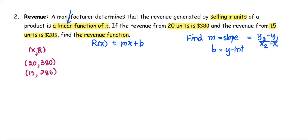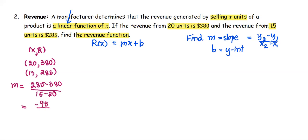With these two ordered pairs, we can find m. m equals y2 minus y1 over x2 minus x1, which is 285 minus 380, all divided by 15 minus 20. The numerator simplifies to negative 95 and the denominator simplifies to negative 5, giving us m equals 19.